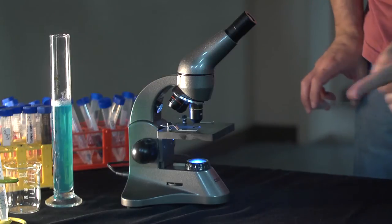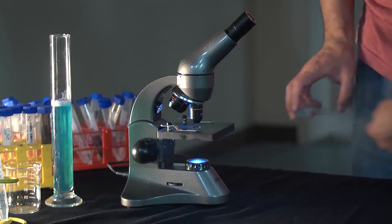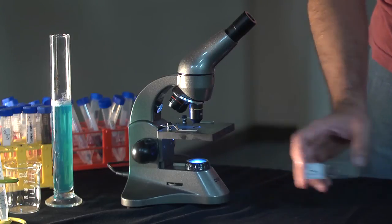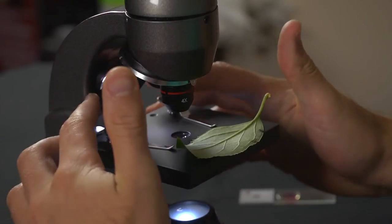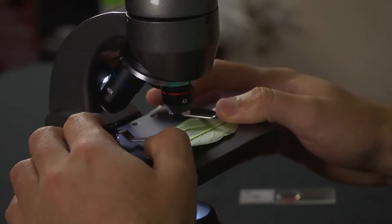Most biological microscopes only include a transmitted light source. That means they can only view transparent objects. On this model we've added a reflective light source so you can also look at semi-transparent or even opaque samples.